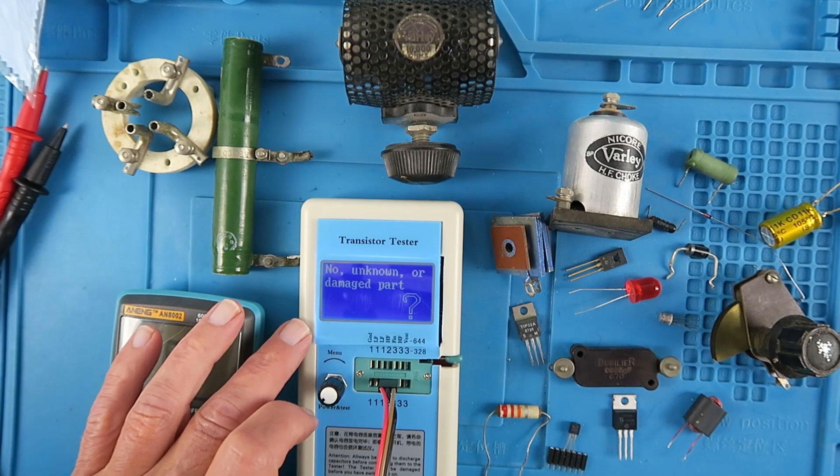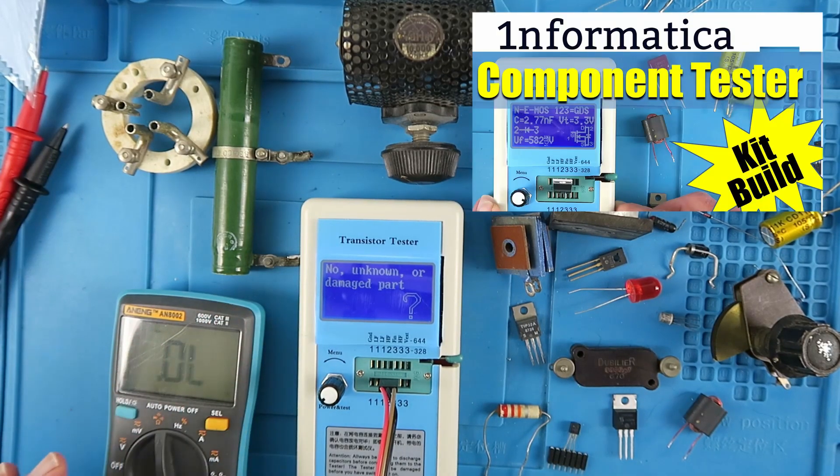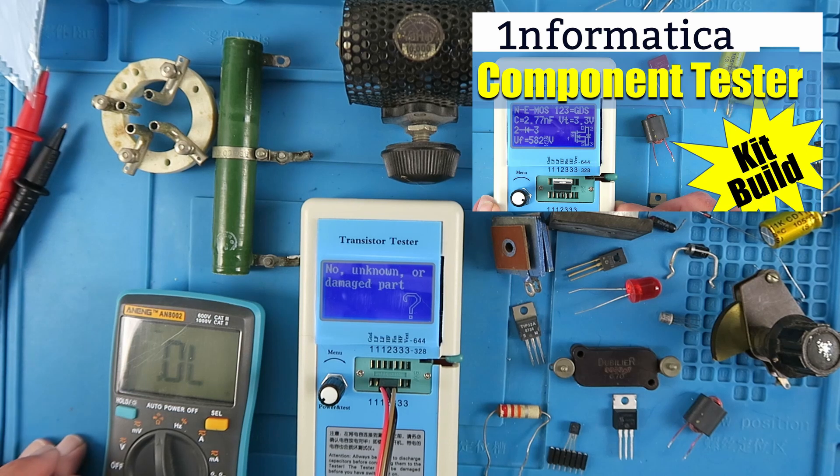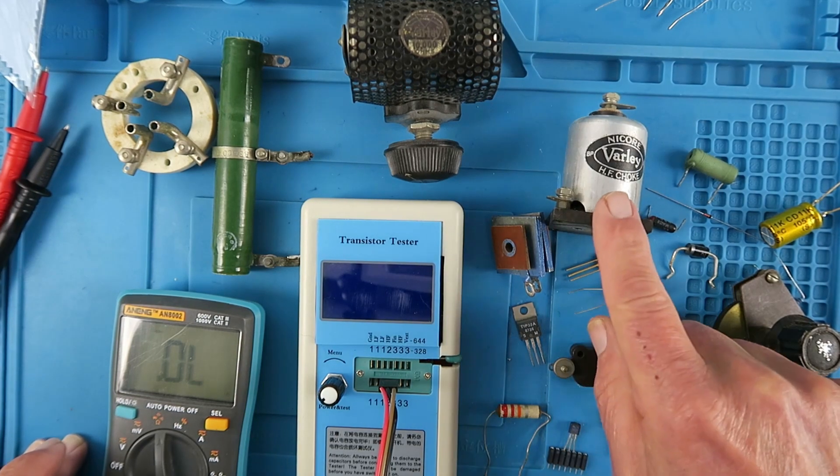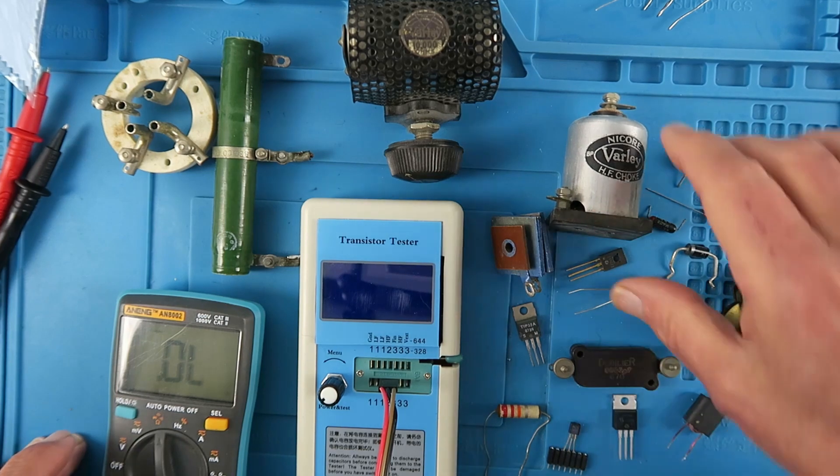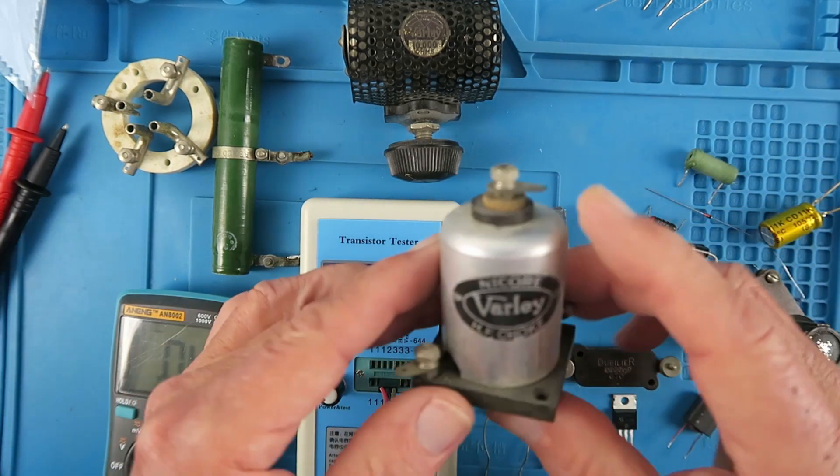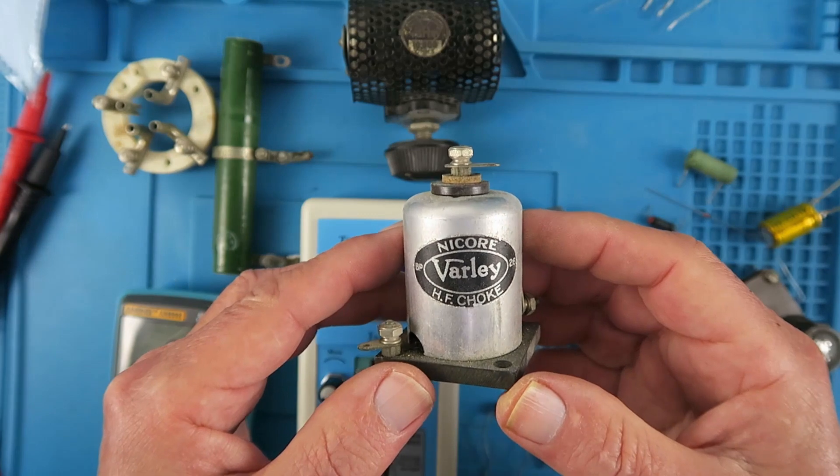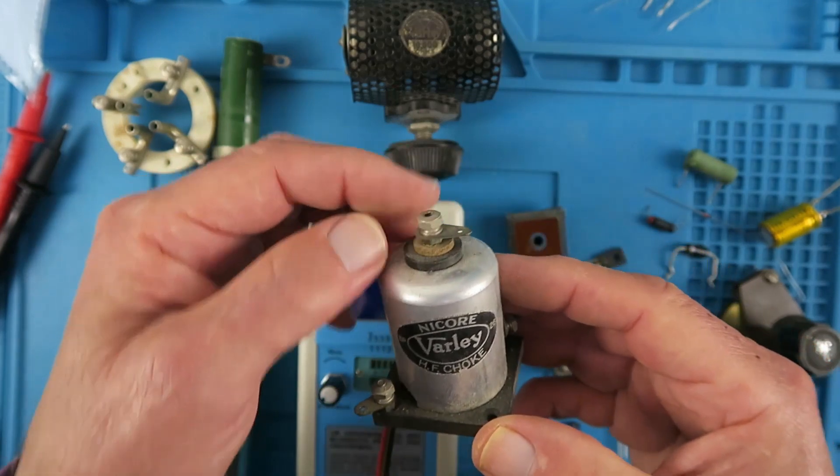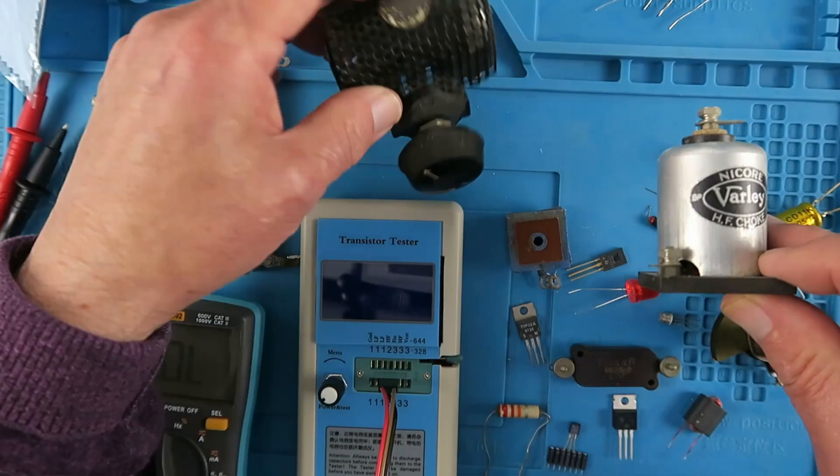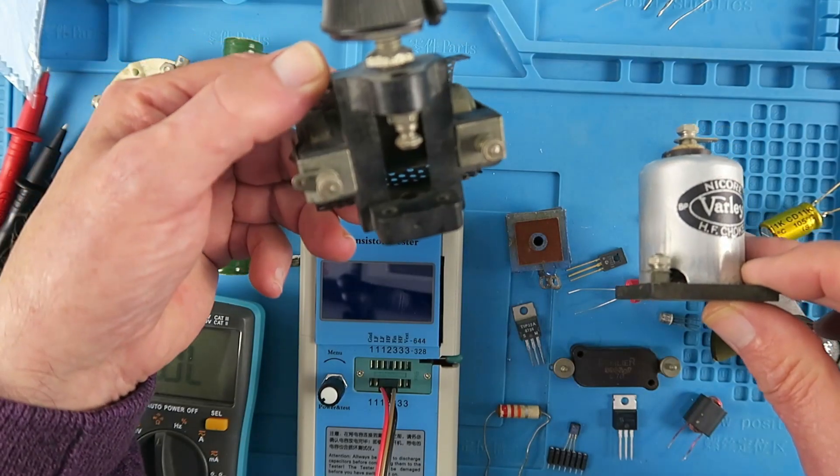Having recently built this component tester, I thought it would be fun to take a look at a range of components and see what it makes of them, especially some vintage parts. Back in the day, this choke or inductor has screw terminals attached to it, as indeed does this variable resistor or rheostat.